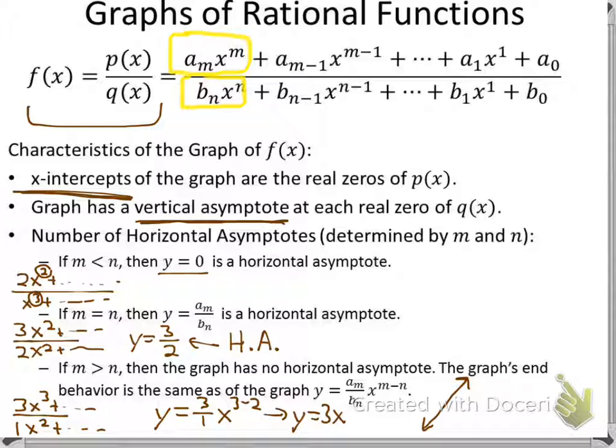So the graph might do various things in the middle, but it will exit following that end behavior. If the end behavior were y equals negative x, it would go in the opposite direction. These are the different parts we need: x-intercepts, vertical asymptotes, and horizontal asymptotes, which give us a general idea for the graph. Then we can plot some points and graph it.